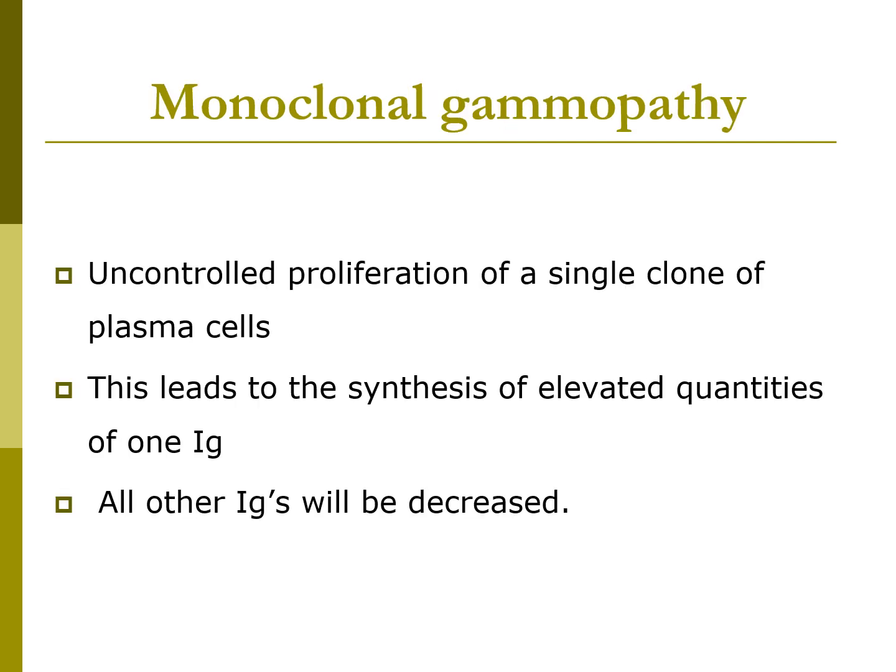A monoclonal gammopathy is characterized by a severe increase in only one immunoglobulin type. It is an uncontrolled proliferation of a single clone of plasma cells, leading to elevated quantities of only one immunoglobulin while all others are decreased. Examples include multiple myeloma, Waldenstrom's macroglobulinemia, and cold agglutinin disease.